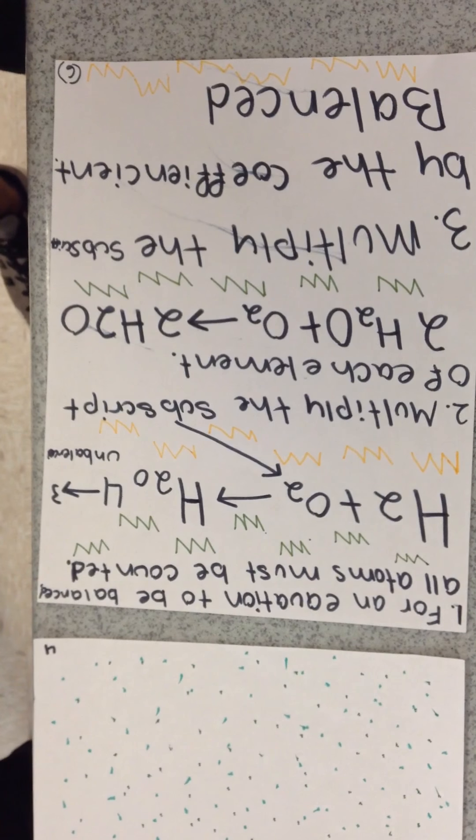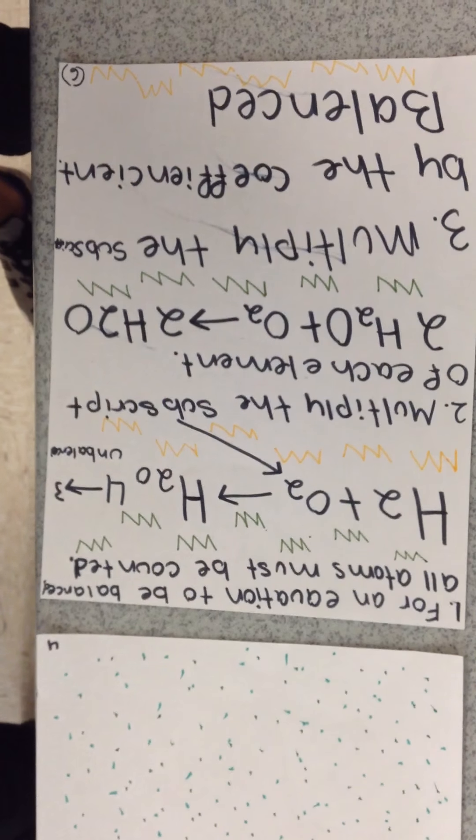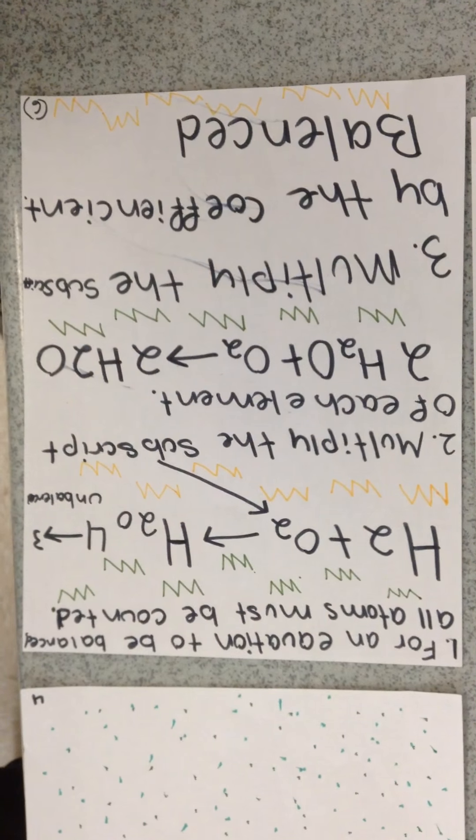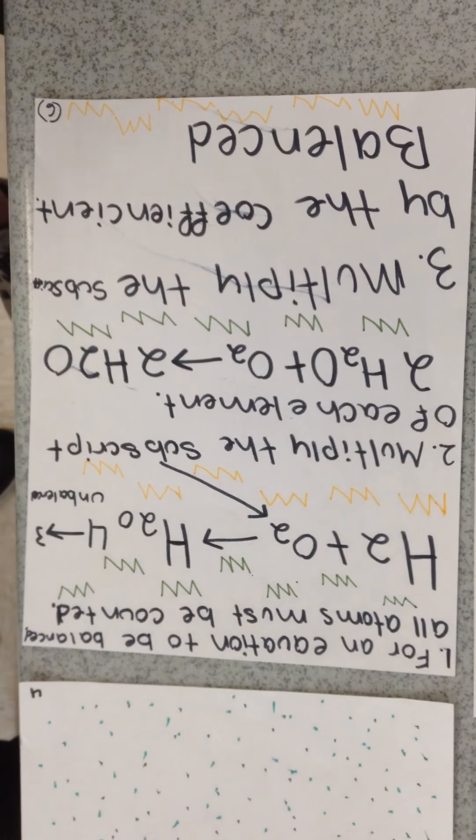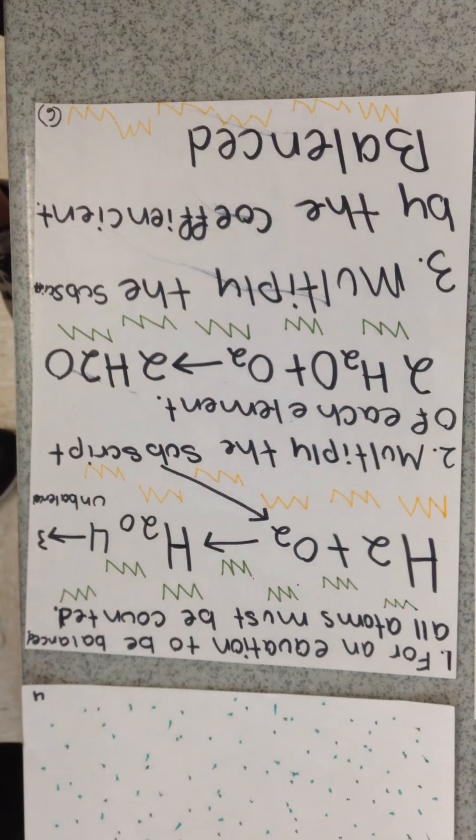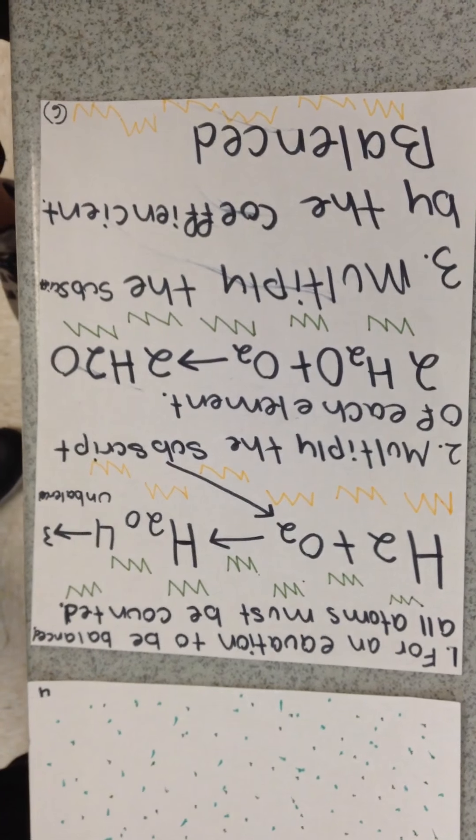2H2 plus O2 equals 2H2O. Multiplying the substance by the coefficient balances it.